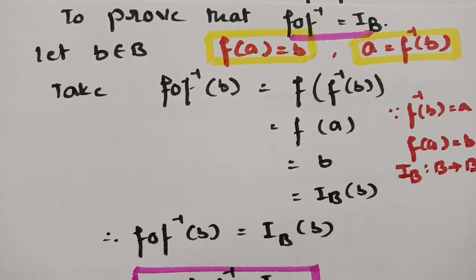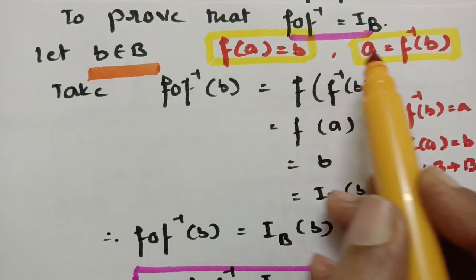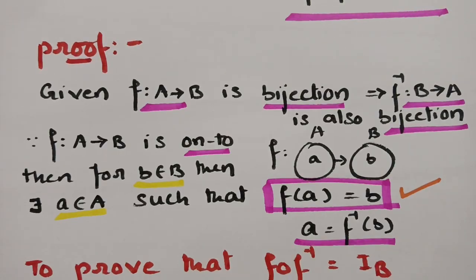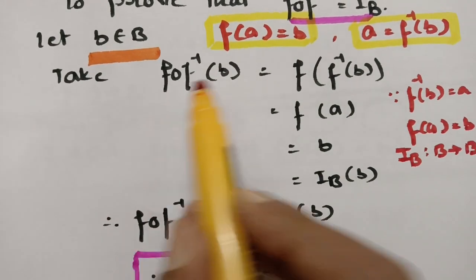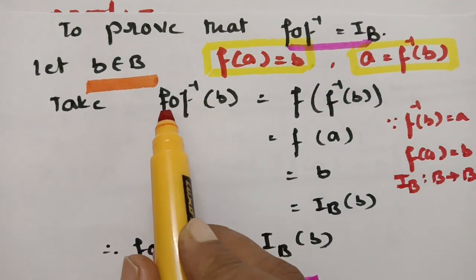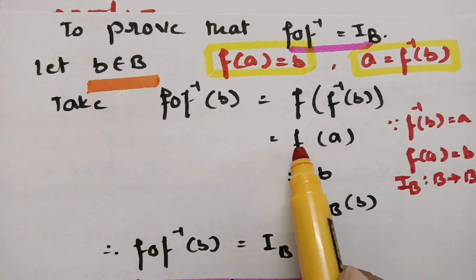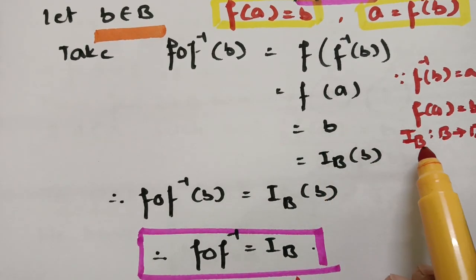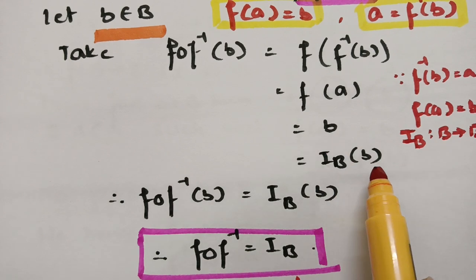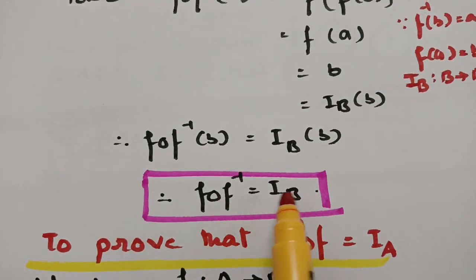Since the domain is B for both, let small b belong to capital B. We have already established that f of a equals b and a equals f inverse of b. Starting with f circle f inverse of b — as this is a composition, it becomes f of f inverse of b. What is f inverse of b? It is a. And f of a is equal to b, since f is an onto function. Since IB is an identity function from B to B, this can be written as IB of b. We started from f circle f inverse of b and got IB of b. Therefore, both functions are the same.